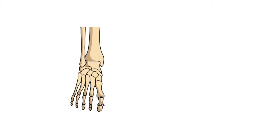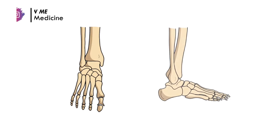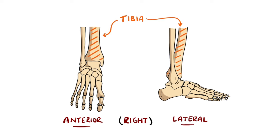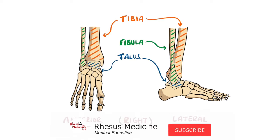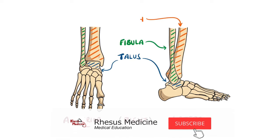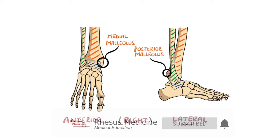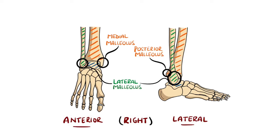Ankle fractures are common injuries involving a break in one or more of the bones that make up the ankle joint. There are three bones that make up the ankle: the tibia, fibula, and talus — specifically the medial and posterior malleoli of the tibia and the lateral malleolus of the fibula.